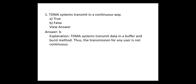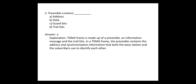TDMA systems transmit in a continuous way. Question 2: preamble contents — a TDMA frame is made up of preamble, information message, and trail bits. The preamble contains the address and synchronization information that both the base station and the subscriber use to identify each other.